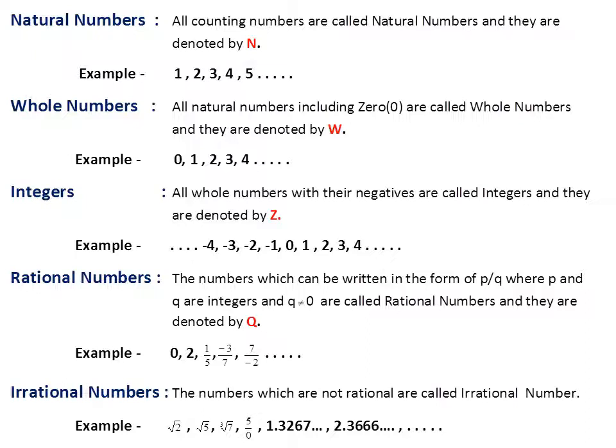Our third type is integers. All whole numbers with their negatives are called integers and they are denoted by capital Z. As you know, on a number line, zero is in the middle, positive numbers are on the right side, and negative numbers are on the left side. If we consider all these numbers together, we call them integers.